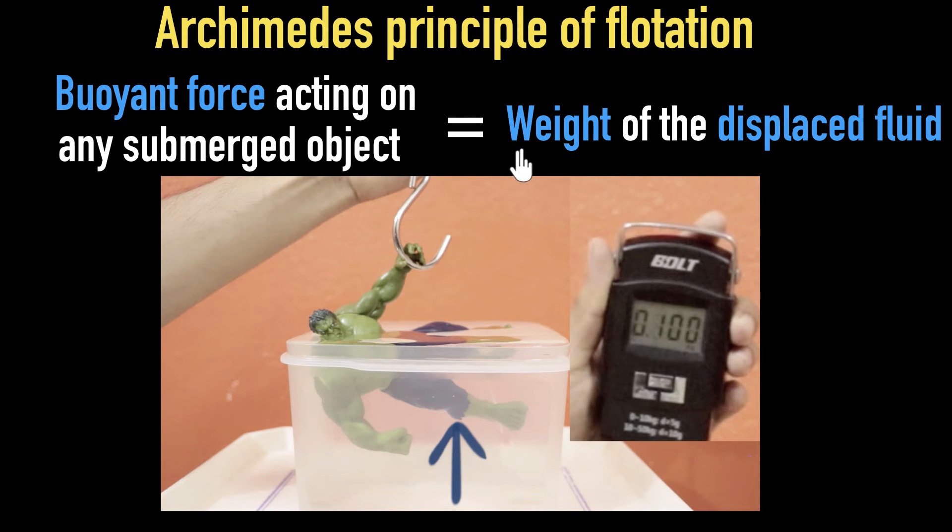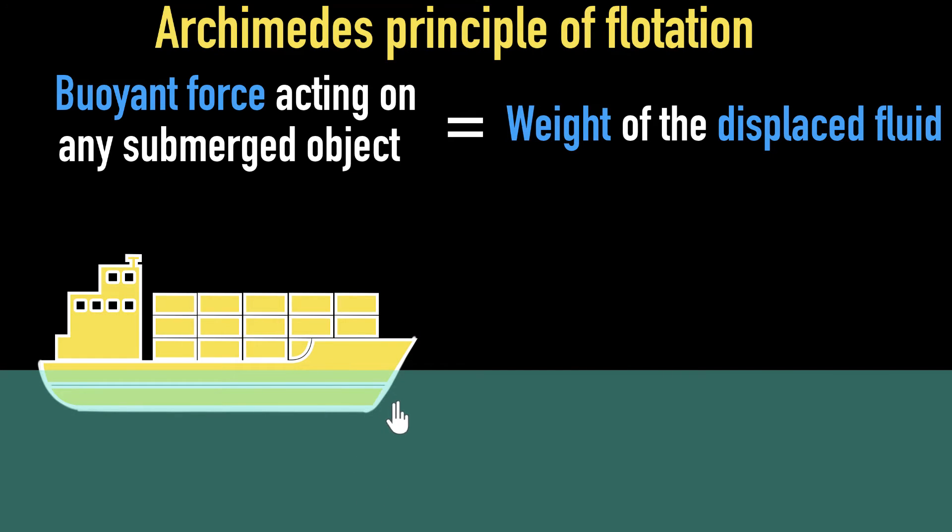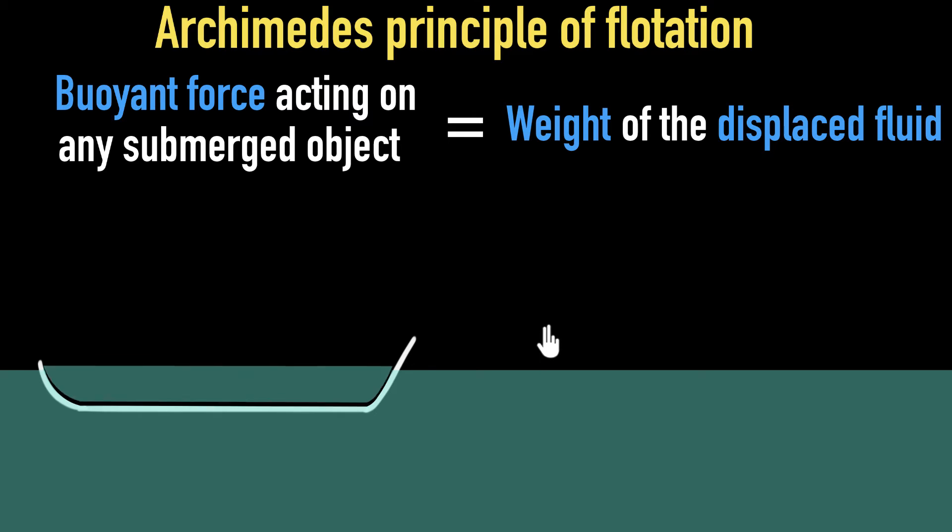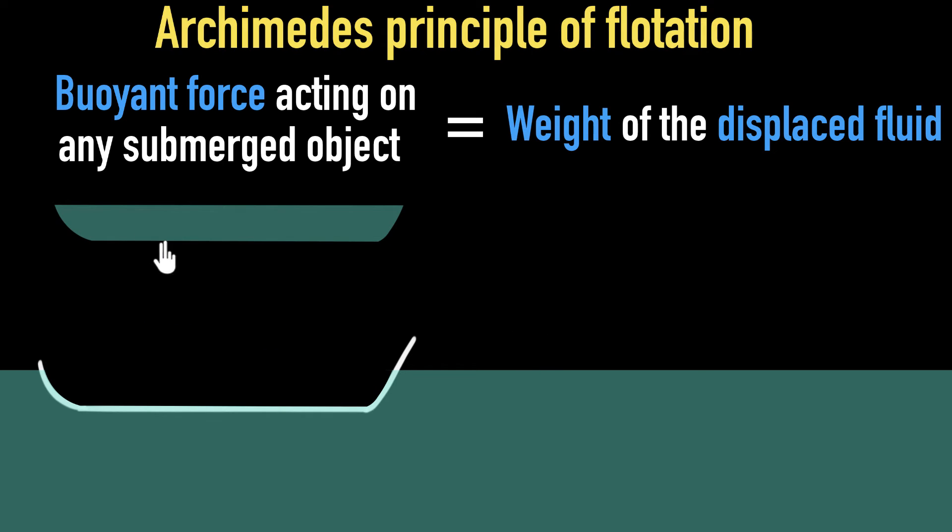Now, before we explore why Archimedes principle is true, let's quickly go ahead and see if we can answer our original question. So why does a metallic ship float? Let's concentrate only on the base of this ship so that it becomes easier to analyze. So if I only look at the base of that ship, notice because there is no water inside that ship, that means this much amount of water must have been displaced. Now, that is a lot of water if you think about it because this ship is pretty big. And since this is a lot of water, it has a lot of weight, and therefore, from Archimedes principle, the buoyant force acting on this ship must be very large, large enough to support the weight of that entire ship.